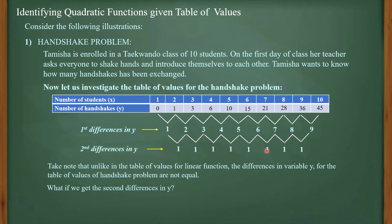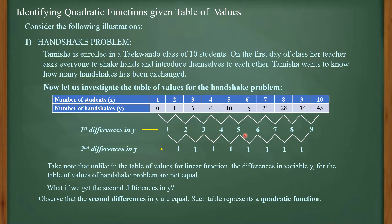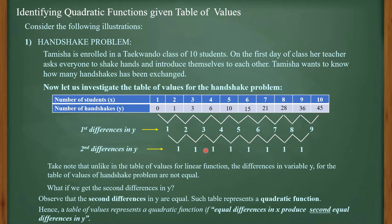All second differences in y are equal — this is the basis for identifying a quadratic function from a table of values. When the first differences in y are not the same but the second differences in y become constant, we have a quadratic function. Hence, a table of values represents a quadratic function if equal differences in x produce equal non-zero second differences in y.